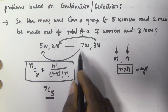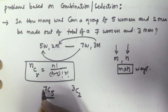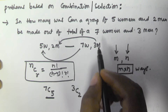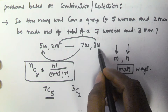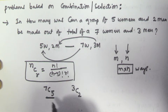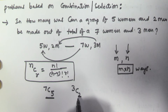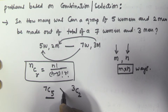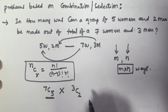So the number of ways to select 5 women out of 7 women is 7C5, and the number of ways to select 2 men out of 3 men is 3C2. The combined selection of 5 women out of 7 women and 2 men out of 3 men is given by 7C5 into 3C2.